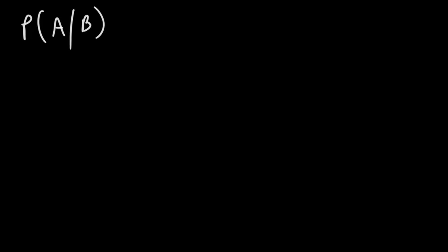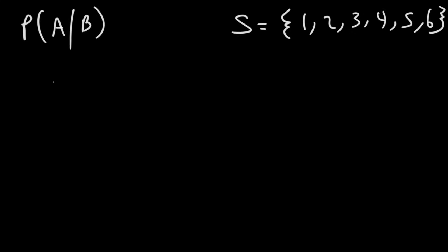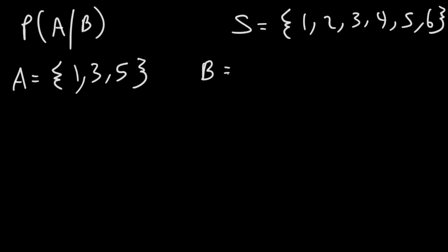Let's say we have a six-sided die with a sample space of the numbers one through six. Event A is any time we get an odd number when we roll the die — so one, three, and five. And event B corresponds to the numbers three, four, and five.